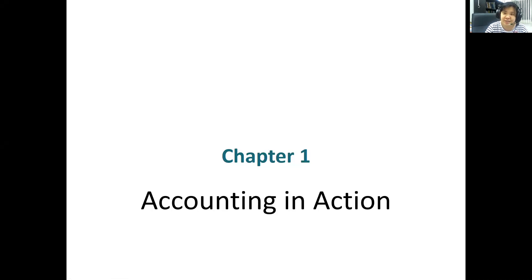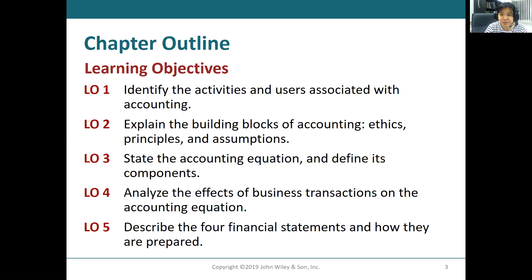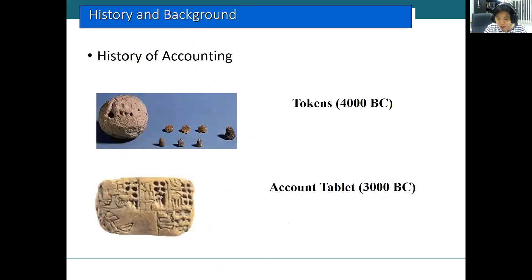When did accounting appear? One thousand years ago, two thousand years ago, or six or seven thousand years ago? Accounting first appeared about six or seven thousand years ago in Assyria and Babylon. About four thousand years before Christ, we found tokens — tokens made of clay.